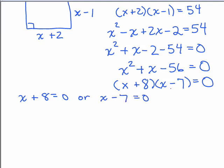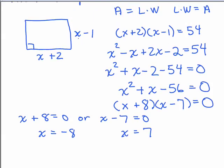We set each factor that has a variable equal to zero, so x could be negative 8 or x could be 7. Looking at our picture, if x were negative 8, this side would be negative 9 — you can't have a negative side length. It's not that x can't be negative 8 in general, but plugging it in here doesn't make sense for this picture. So x cannot be negative 8.